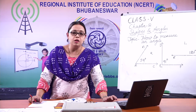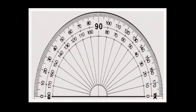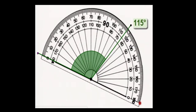This is the protractor. It goes from 0 to 180 with two scales — inner and outer scale. I have already explained which scale to use when. Look at this picture: this angle is 115 degrees. Which side is the opening? Left. So which scale do you use to measure it? The outer scale.